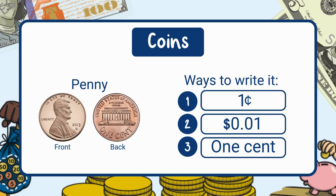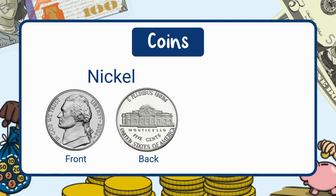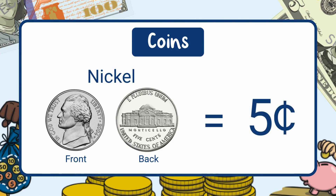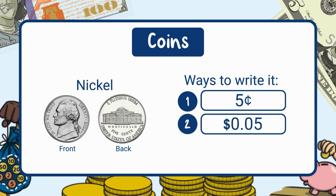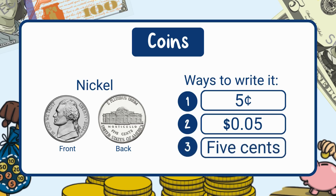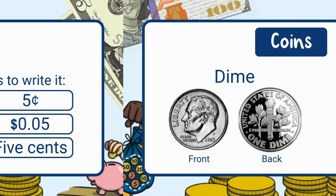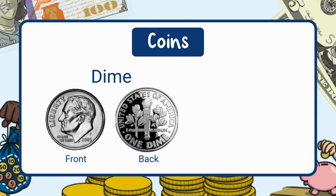Third, there's the written form — we can also write it out as 'one cent' with letters. This is a nickel. It's worth five cents — that's five pennies. Ways to write it: standard form, five cents; decimal form, five cents; written form, five cents.